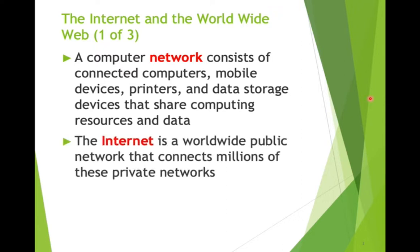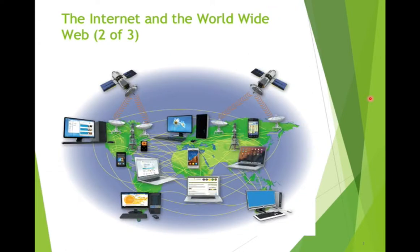The Internet is a worldwide public network that connects millions of these private networks. When we're talking about the Internet, we're talking about a lot of interconnected networks that are private and not available to everyone, with a lot of different devices and data — not just web pages. That's what's important to distinguish between the Internet and the World Wide Web.